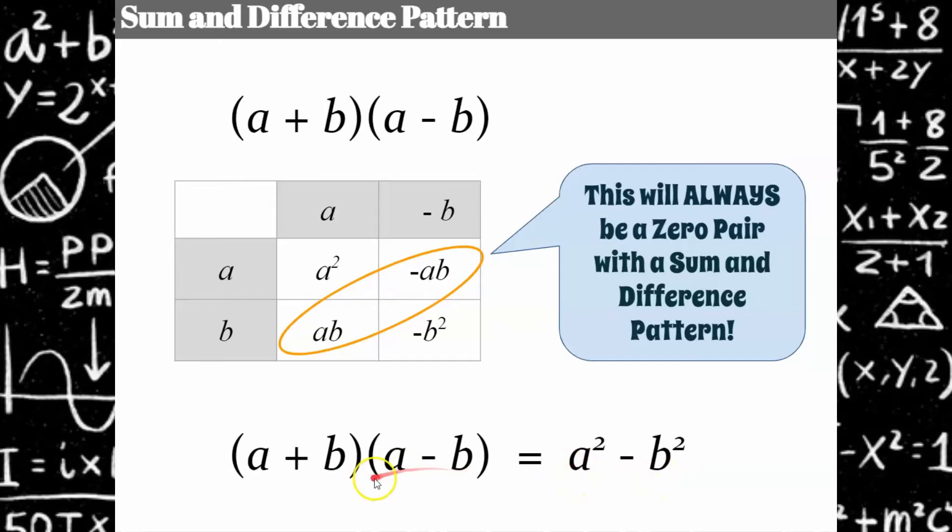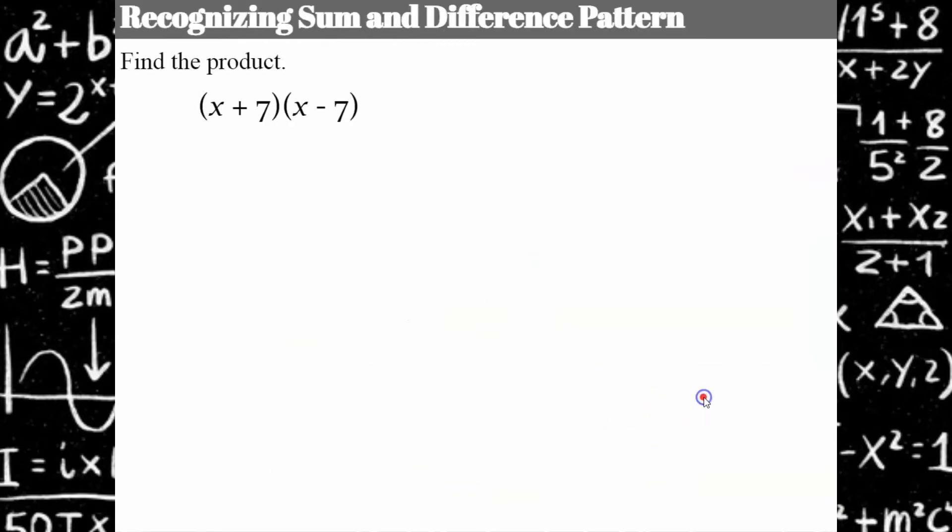the product is going to be A squared minus B squared. So you could just take the value of your A term, square it, the value of your B term, square it, and subtract those products.